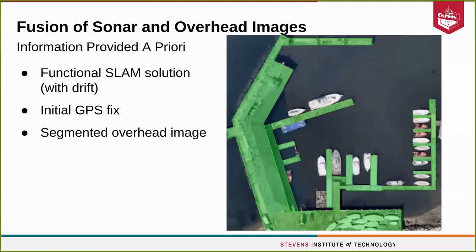The information provided to the vehicle a priori is a functional SLAM system, albeit with drift, an initial GPS fix before the vehicle dives, and a segmented overhead image, shown here in green. The segmentation identifies static structure that will be used as an aid to navigation in this algorithm.